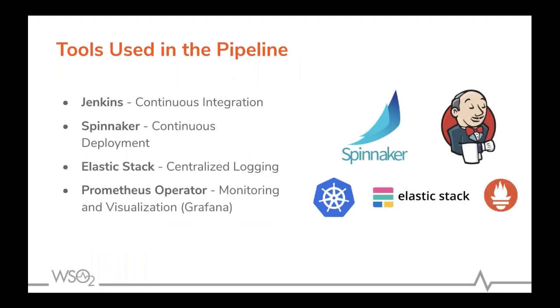The WSO2 Kubernetes pipeline makes use of the following well-established tools: Jenkins, Elasticsearch Stack, Prometheus, and Spinnaker.